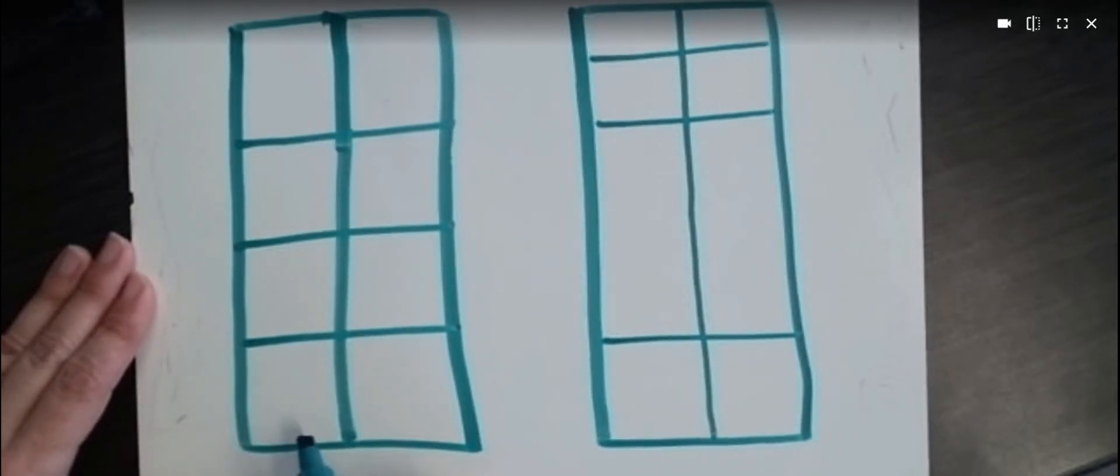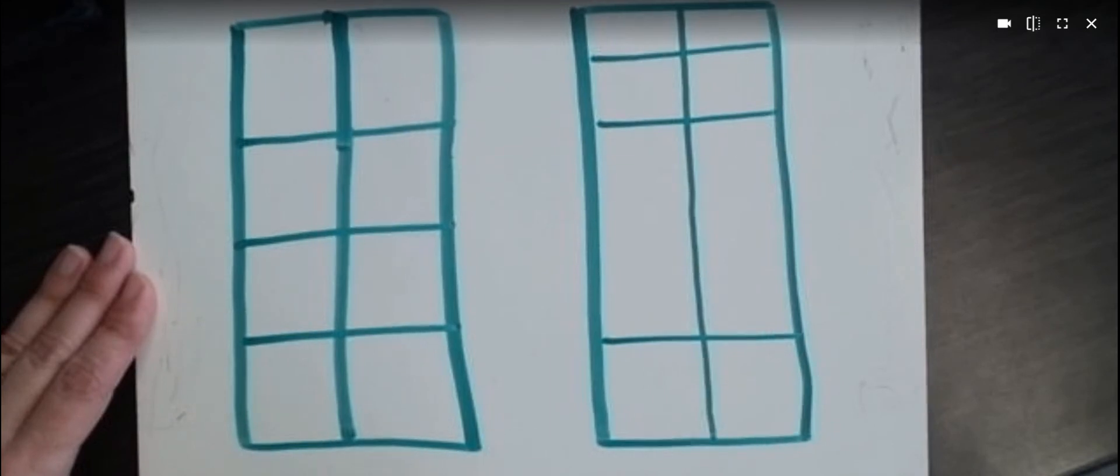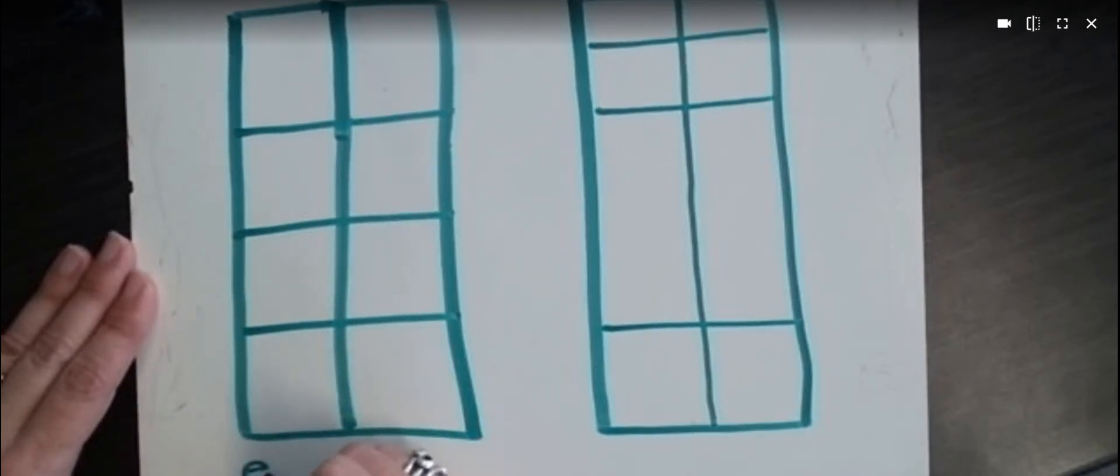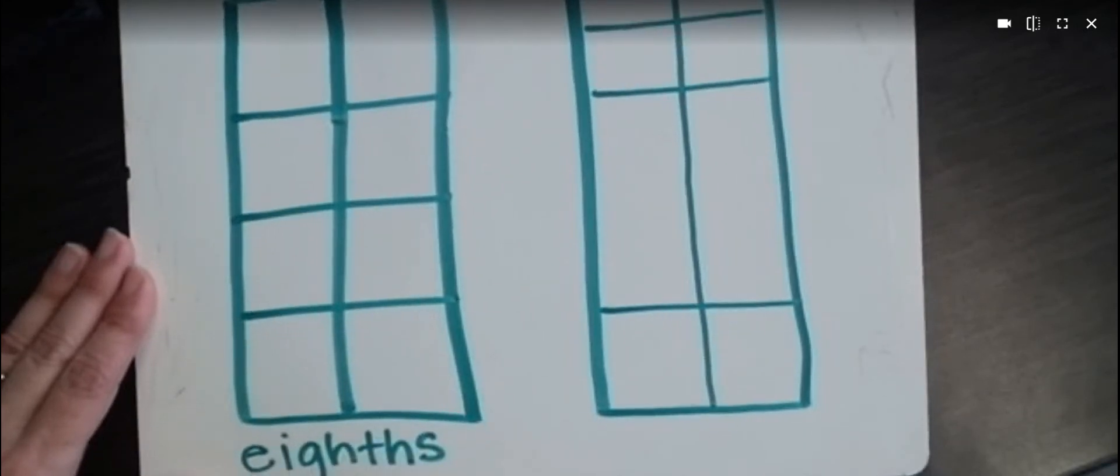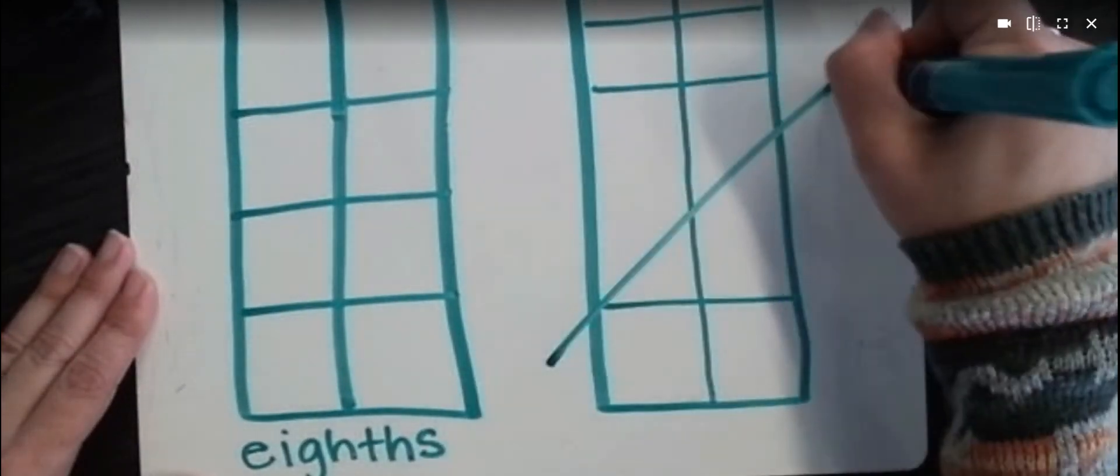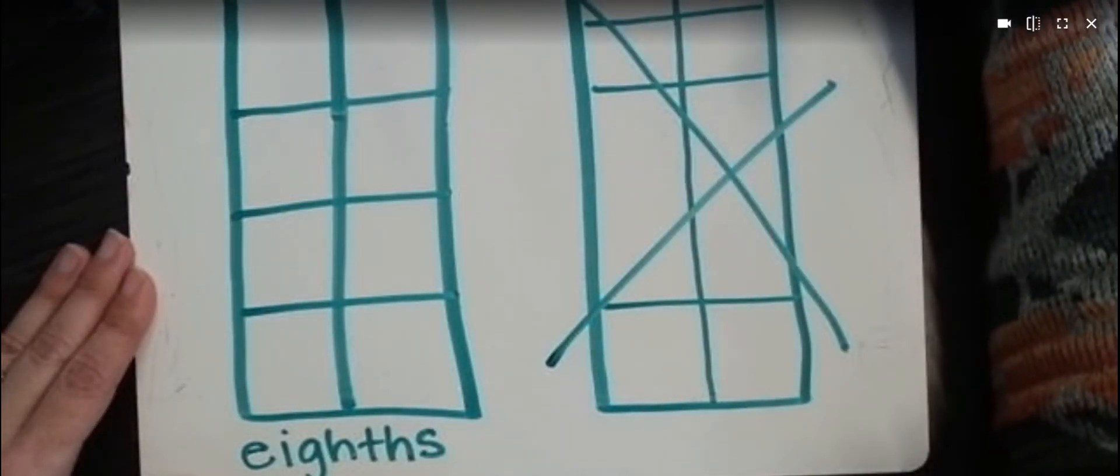But this one is divided into equal parts, and this one is not. So over here, we can say that this is divided into eighths, or eight equal parts. This one is not equal. So we're going to cross it out.